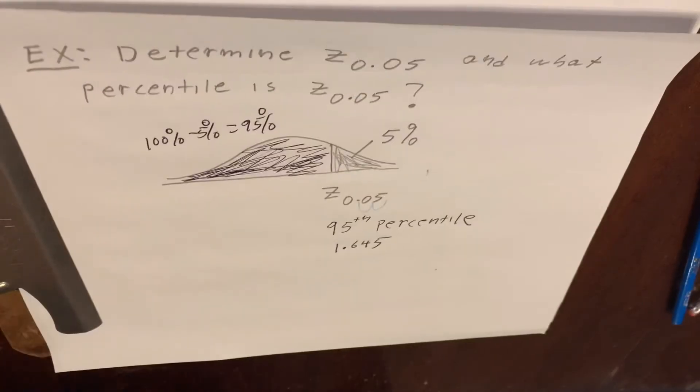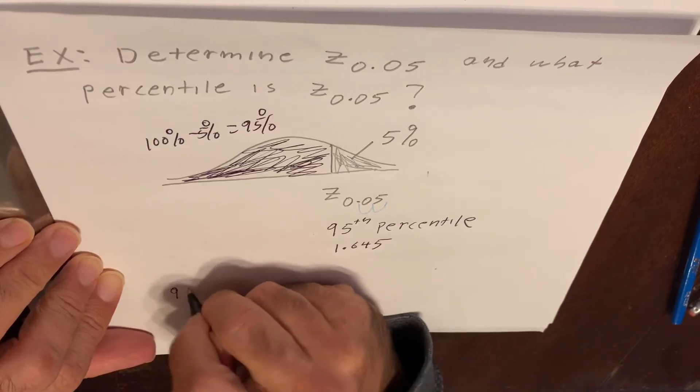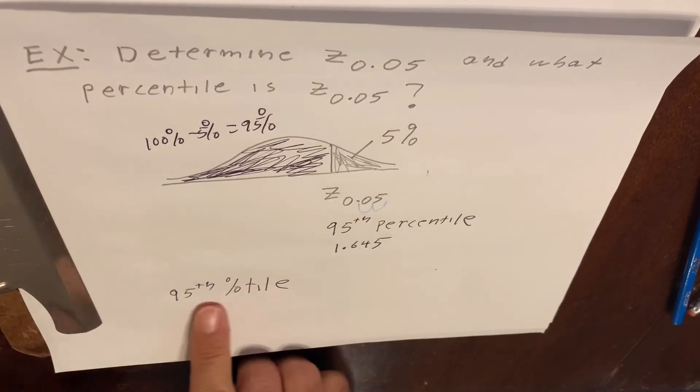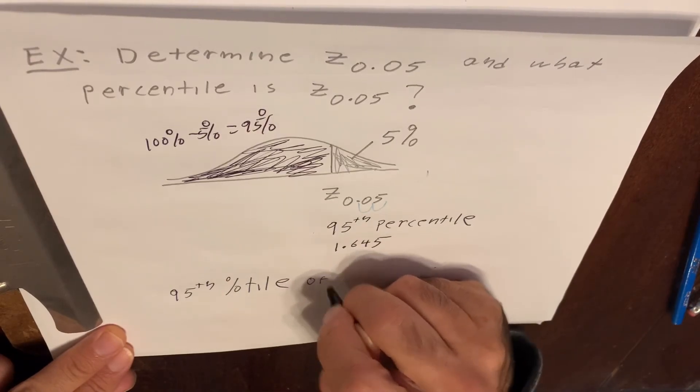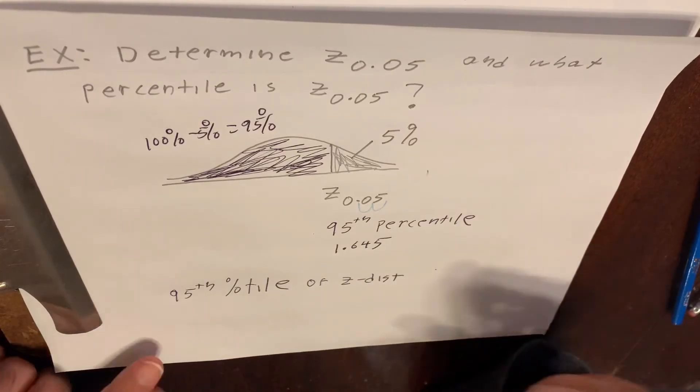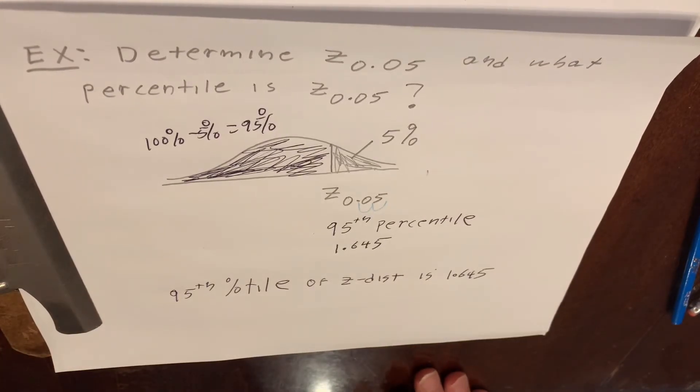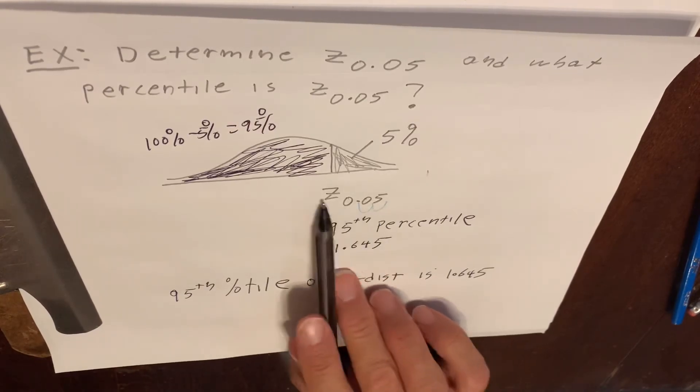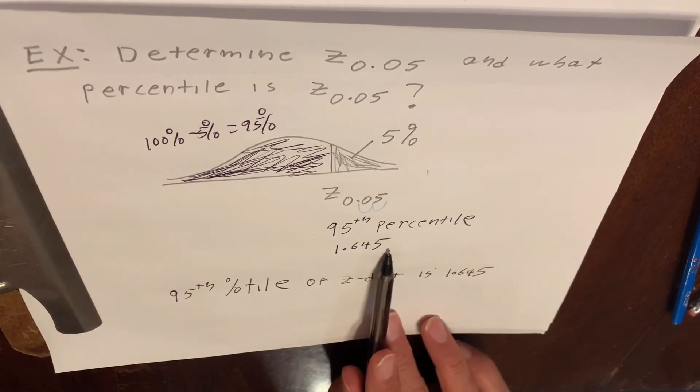What does that tell you? This tells you two things. This tells you that the 95th percentile, that's a short way to write percentile, the 95th percentile of the Z distribution, also known as the standard normal distribution, is 1.645. And it also tells you that Z sub 0.05 is equal to 1.645.